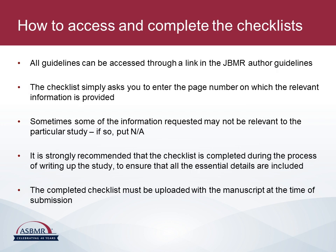This slide summarizes how to access and complete the checklists for JBMR publications. All the relevant guidelines can be accessed through a link in the JBMR author guidelines. The checklist simply asks you to enter the page number on which the relevant information is provided. Sometimes not all of the information requested is relevant to your particular study — if so, just put 'not applicable.' We recommend very strongly that the checklist is completed during the process of actually writing up the study, which will help ensure all essential details are included. It is also essential to upload the completed checklist with the manuscript at the time of submission.